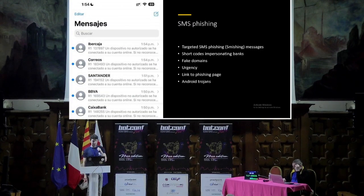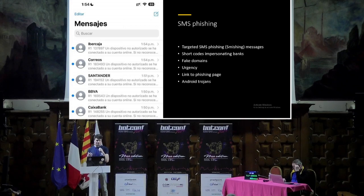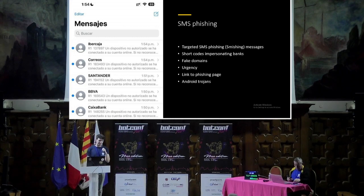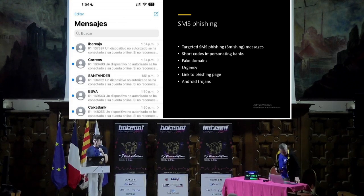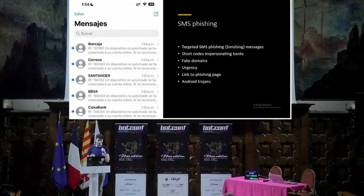The campaign started with SMS phishing messages targeted towards victims, using short codes impersonating Spanish banks like Uber Caja or Santander. These included fake domains and phishing links to pages impersonating banking login portals, with a sense of urgency — for example, messages stating an unauthorized device has accessed your account. Once actors had access to an account, they needed to circumvent MFA, so they also distributed Android Trojans to capture OTP codes from SMS messages.